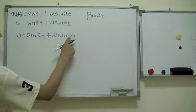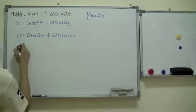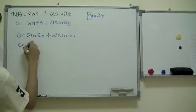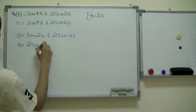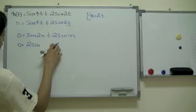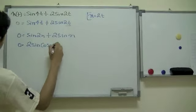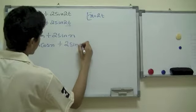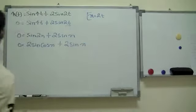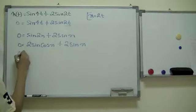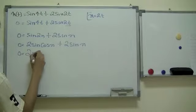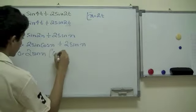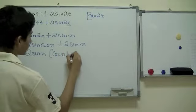So, it's 2 sine of n. Then it equals — putting down 2 over here — 2 sine n cosine of n, by using the double angle properties, plus 2 sine of n. Then we can factor this as 2 sine of n times the quantity cosine of n plus 1.